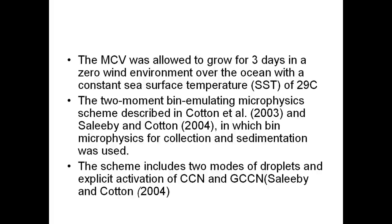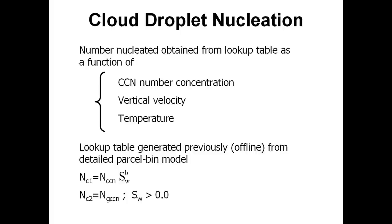We used two-moment bin microphysics — a bin-emulating microphysics model. It emulates bin microphysics in terms of collection, sedimentation, and condensation, but within the constraints of prescribed basis functions, making it a hybrid between a bulk model and a bin model. It includes two modes of cloud droplets, where the smaller mode is activated by CCN and the riser mode is activated by concentrations of GCCN. The code has look-up tables generated offline by running an ensemble of simulations with varying CCN concentrations, vertical velocity, and temperature, assuming CCN are ammonium sulfate. We're modifying it to vary chemical properties using the kappa parameter developed by Petters and Kreidenweis.